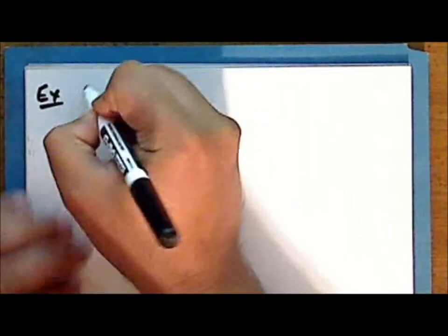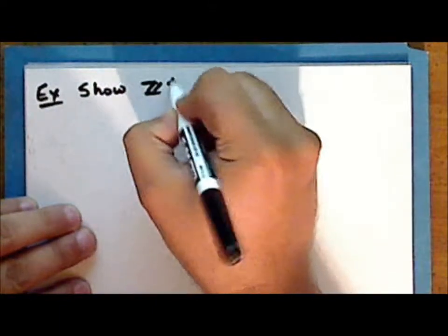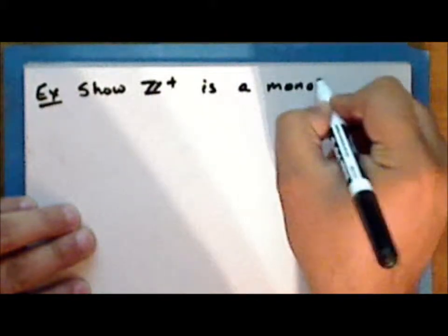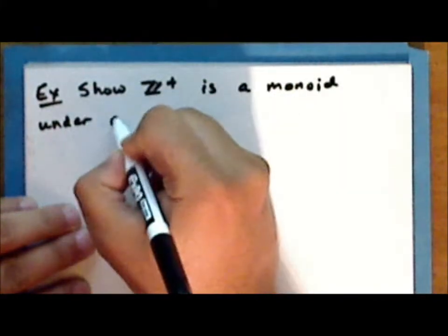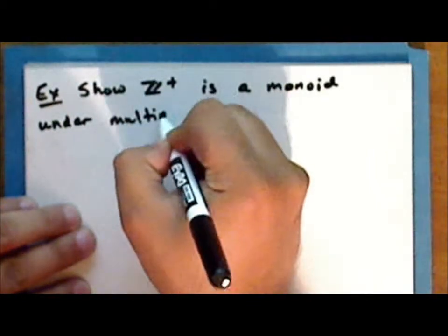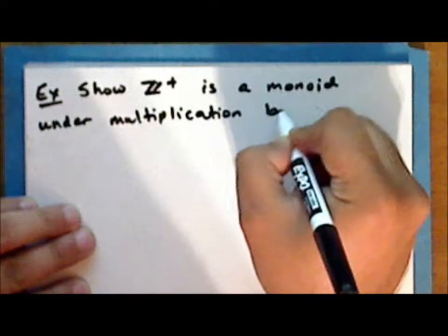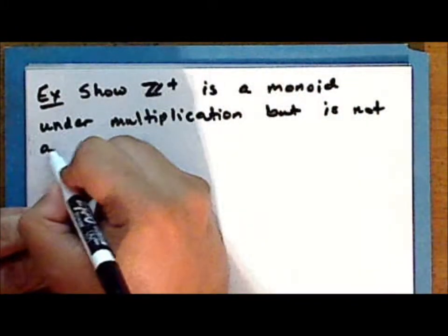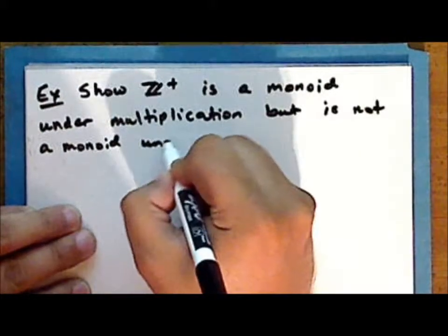As an exercise, show that the set of positive integers is a monoid under multiplication, but is not a monoid under addition.